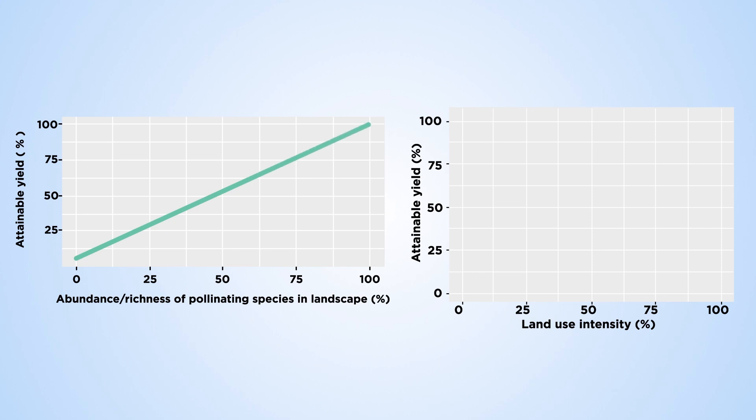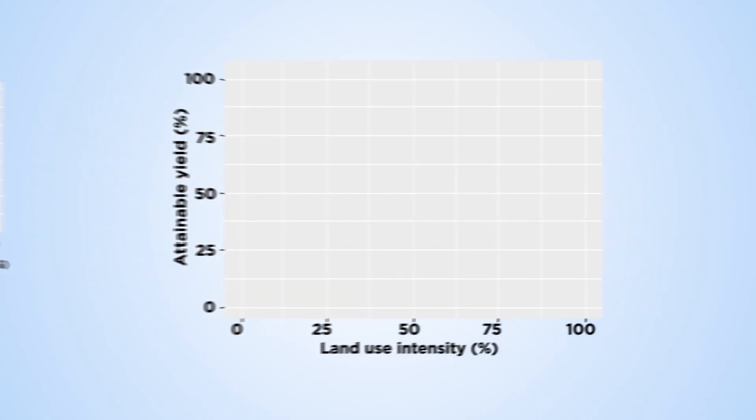We know that yields increase if the abundance of pollinators increases, but this depends on the ecology of each crop. Crops with high dependence on natural pollinators, here the green line, will experience the greatest decline in yield with increasing intensification, while complete independence from pollination functions shows a classical saturation curve, represented by the black line.